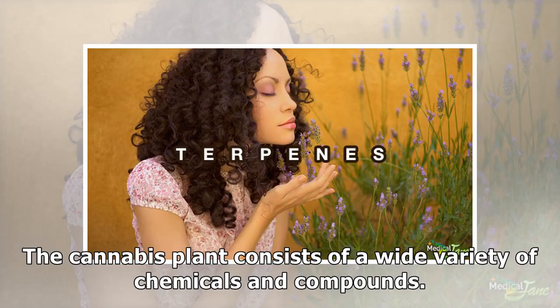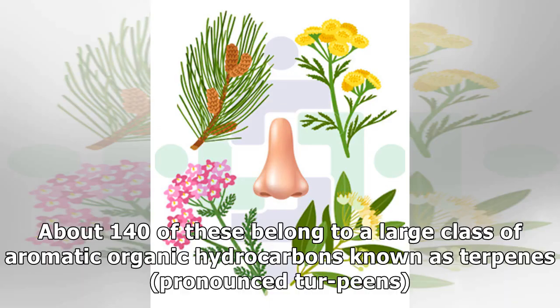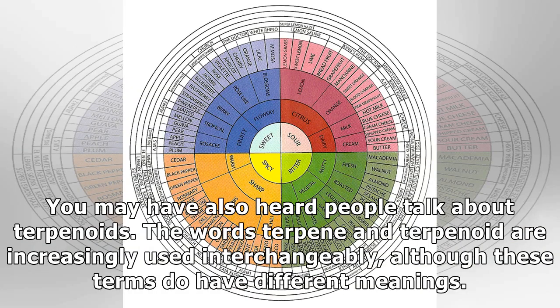The cannabis plant consists of a wide variety of chemicals and compounds. About 140 of these belong to a large class of aromatic organic hydrocarbons known as terpenes. You may have also heard people talk about terpenoids.